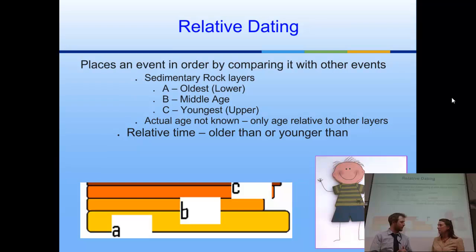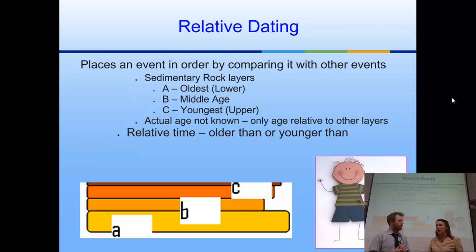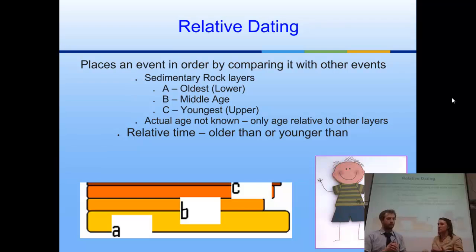We don't care about numbers whatsoever. So I'm older than you are, you're younger than I am — just like in this picture of the two kids, the bigger kid is older than the younger one, with no idea of the actual age of any of them. We've got a diagram here showing an example of relative dating with sedimentary rock layers. Layer A at the bottom is the oldest, B is a little younger, and C on top is the youngest. We only care about older than or younger than.